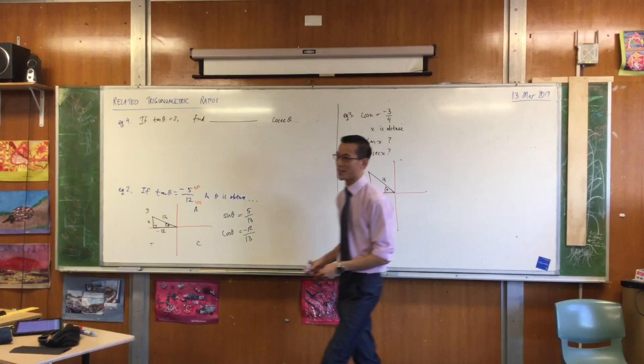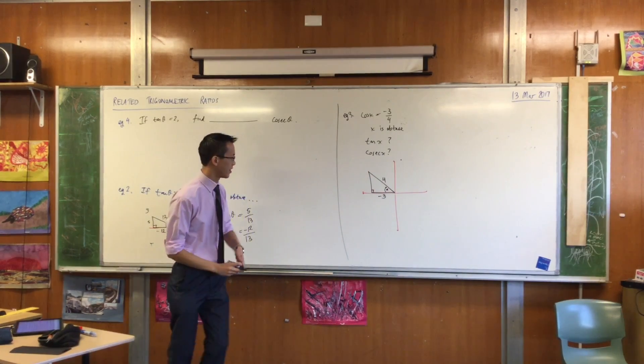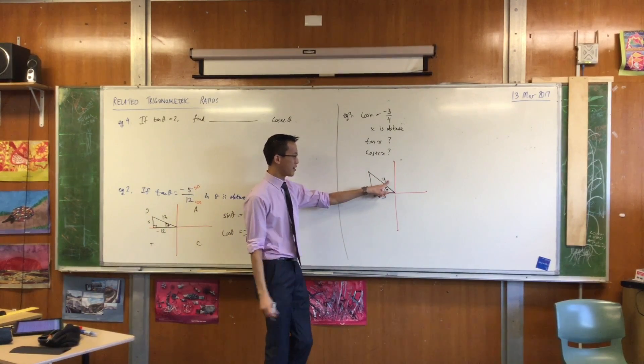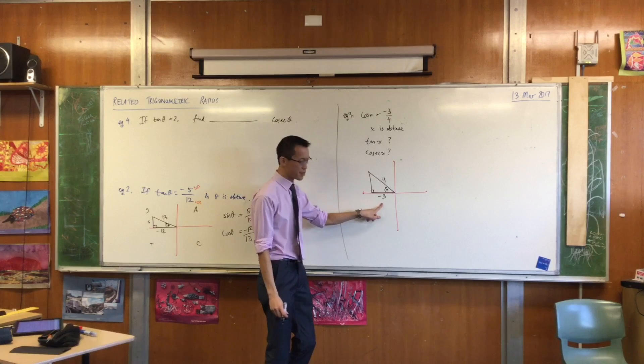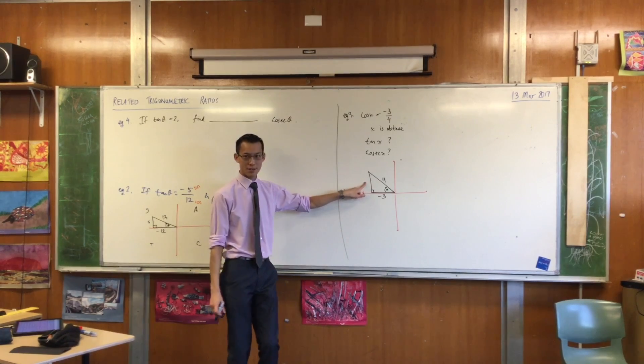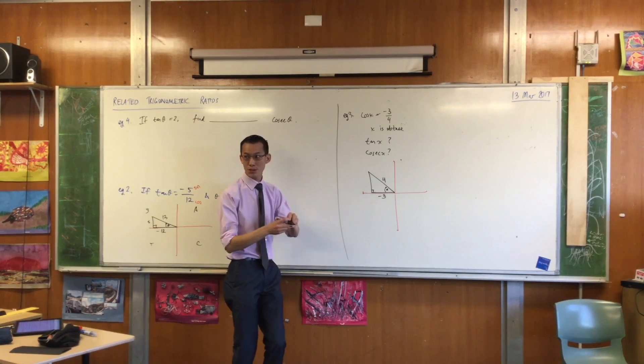Which means, unfortunately, yes, you are going to get some surds here. This is 4 squared is 16, negative 3 squared is 9, so what is this guy over here? Root 7. Root 7.